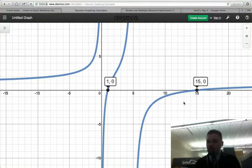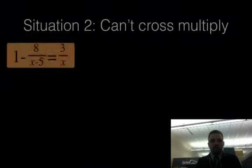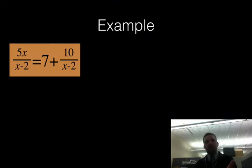All right, why don't you try one on your own? Let's go ahead and try the next one. Try 5 over (x minus 2) equals 7 plus 10 over (x minus 2). I'm going to show you the answer, but you should pause here, try it, and then I'll show you the solution.